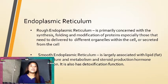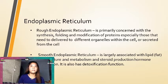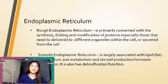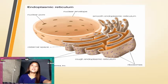Endoplasmic reticulum. The rough endoplasmic reticulum is primarily concerned with the synthesis, folding, and modification of proteins, especially those that need to be delivered to different organelles within the cell or secreted from the cell. The smooth endoplasmic reticulum is largely associated with lipid and fat manufacture, metabolism, steroid production, and hormone production. It also has a detoxification function. This is the picture of the rough and smooth endoplasmic reticulum.